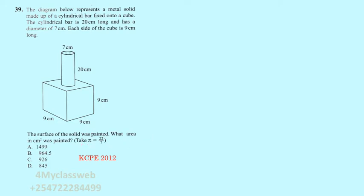This question was explained in Primary Mathematics Book 8, on pages 108 to 111, that is Unit 6. For reference, the candidate can use Primary Mathematics by the Jomo Kenyatta Foundation. In this case, you are told that this shape is going to be painted.